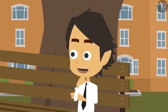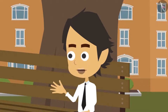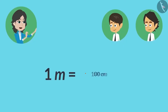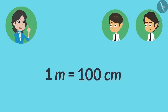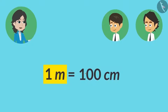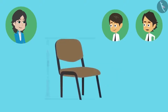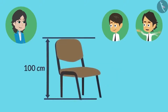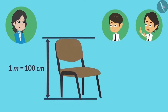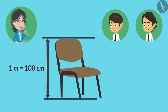Only those objects whose length is more than 100 centimeters are measured in meters. Why only bigger than 100 centimeters? Why not smaller than that? Because one meter has 100 centimeters. Or we can also say that one meter is equal to 100 centimeters. Which means if the length of an object is 100 centimeters, then can we say that the object is one meter long? Absolutely right.